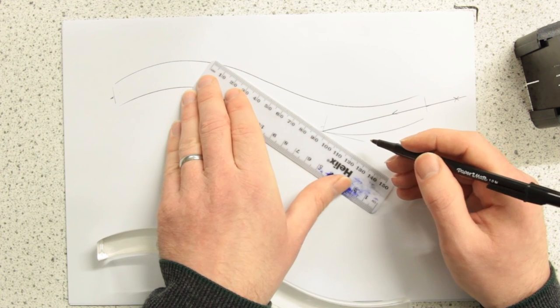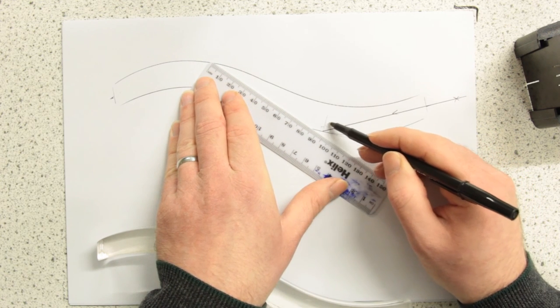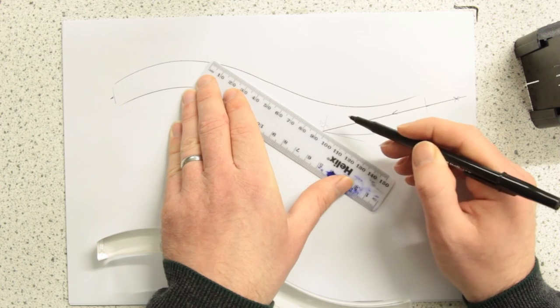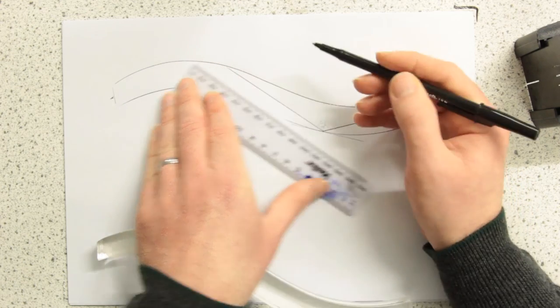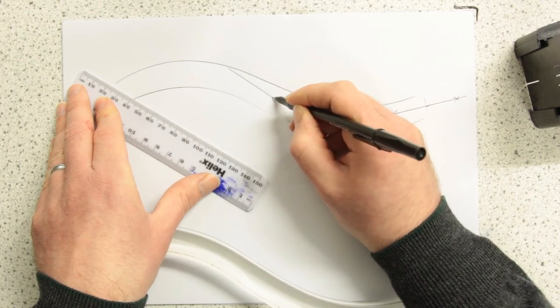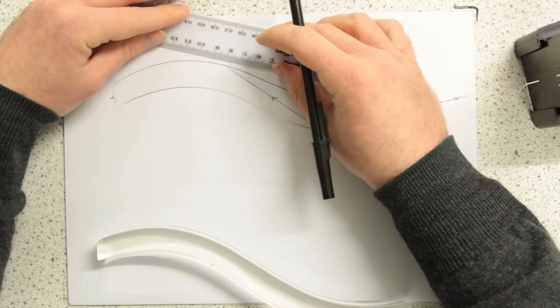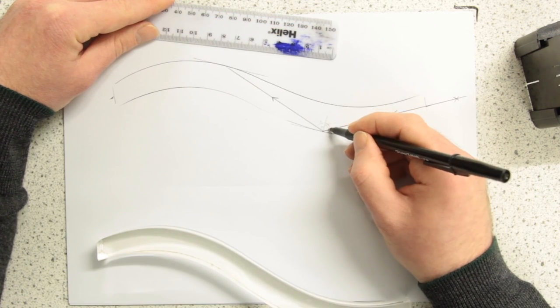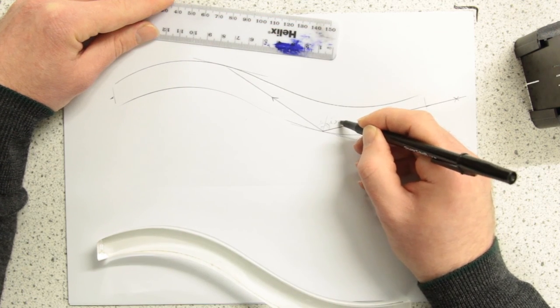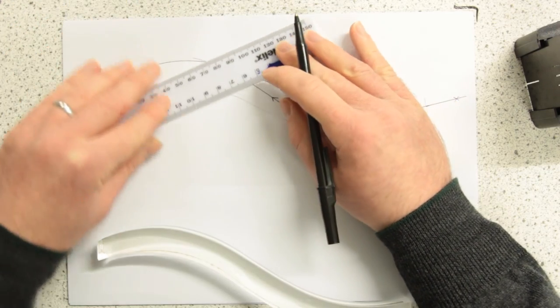And so the angle of incidence will equal the angle of reflection, I and R. Somewhere around there. Again, because the angle of incidence is greater than the critical angle, we're getting total internal reflection.